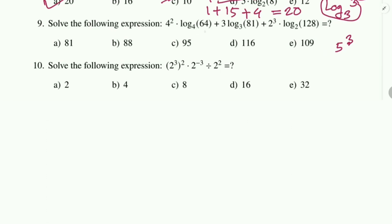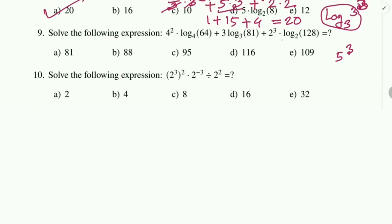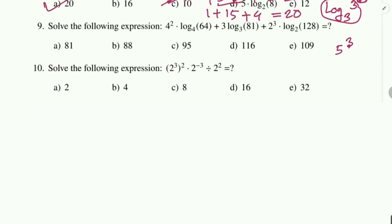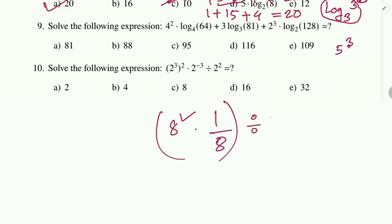Problem 9 (last problem): Solve 4^{log₄(64)} − 3^{log₃(81)} + 2³ + log₂(128). We evaluate: 2³ = 8, and 8² terms cancel. Simplifying the full expression, 8 divided by 4 gives 2. Our answer is option A.